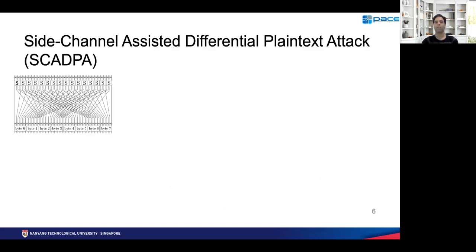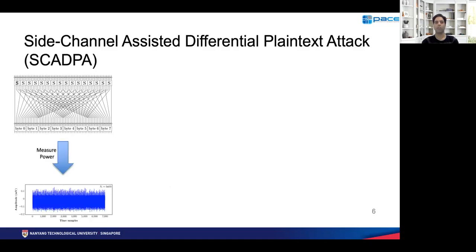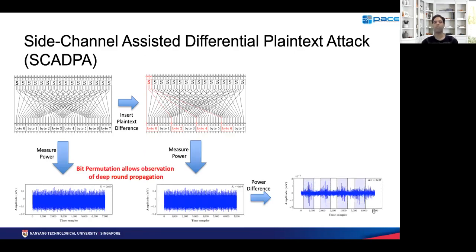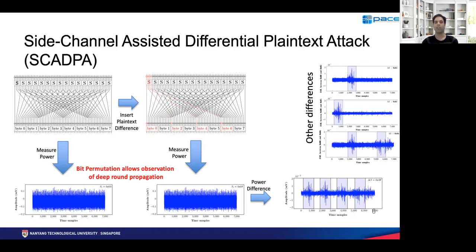A couple of years ago, another variant of such attack was proposed, which was known as CARDPA, or side channel assisted differential plaintext attack. This attack is limited to only bit permutation based ciphers like PRESENT and GIFT. The idea is that you take a sequential or microcontroller based implementation of PRESENT, measure the power consumption for a given plaintext, change one bit of the plaintext keeping everything else the same, and measure again. By looking at the power consumption difference, you could track the propagation of the difference into deeper rounds like round one and round two, which reveals information on the key.